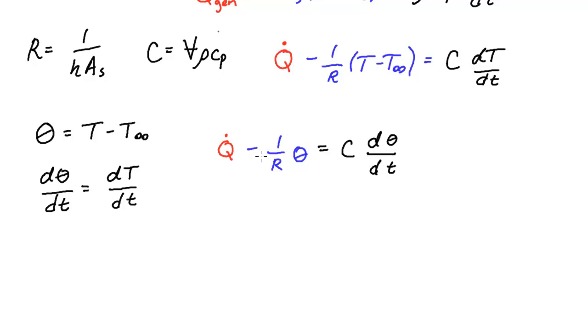Q minus 1 over r times theta is equal to C d theta dt. At this point I want to just rearrange this equation to put it in a more standard form that we will see. I'm going to move the d theta dt term over to this side. I'm going to divide both sides by the capacitance C.